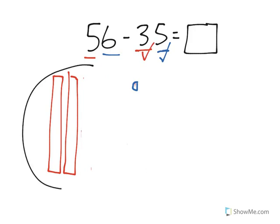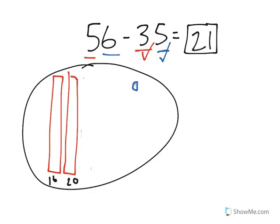How many are left? Well, I have 10, 20, and one more is 21. 56 minus 35 equals 21. That's how you solve a subtraction problem with two digits using place value blocks or drawings in order to help you.